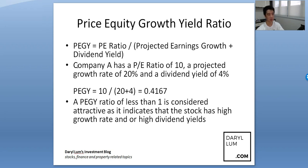For example, let's say company A has a PE ratio of 10, a projected growth rate of 20%, and a dividend yield of 4%. You key in the figures into the formula and you get a result of 0.4167.